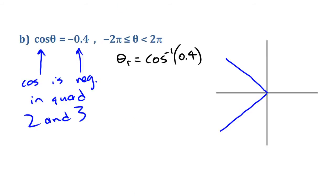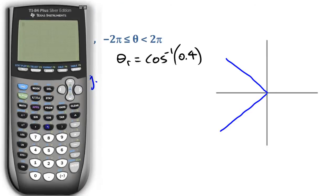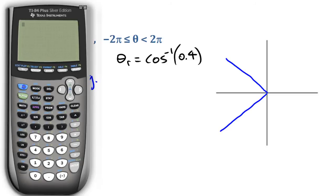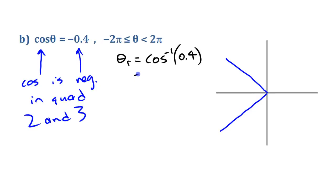Making sure the calculator is in radian mode, we go cosine inverse of 0.4, which gives 1.16 to two decimal places. I'm going to store that number as x on my calculator so I can use it again. So theta reference is approximately 1.16.